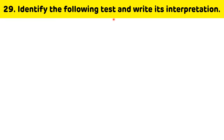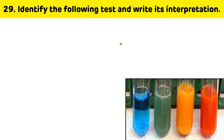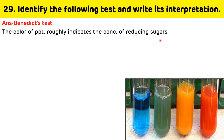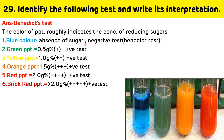Identify the following test and write its interpretation. The color changes from blue to green to yellow to orange. This is the Benedict's test, done for the detection of reducing sugars. The change in color indicates the approximate amount of sugar present. Blue means absence of sugar (negative). Green means 0.5 g%, yellow means 1 g%, orange means 1.5 g%, red means 2 g%, and brick red means greater than 2 g% reducing sugar.